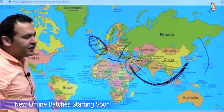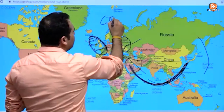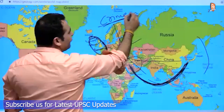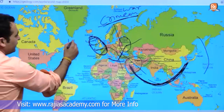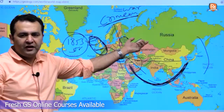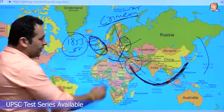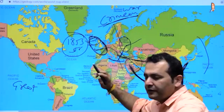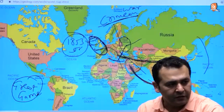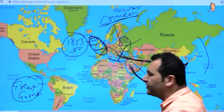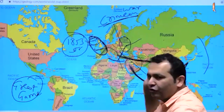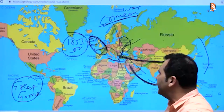Britain and France decided they would not let Russia move further into the Crimean region and Mediterranean. This 'Eastern Question' — whether to let Russia control Eastern Europe — was central to European diplomacy. The Crimean War was fought in 1853–56, with Britain and France fighting against Russia to stop Russia from entering maritime trade routes.